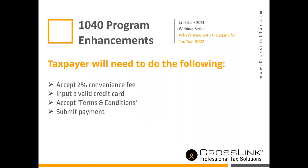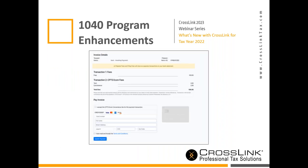Once you send that invoice, what does your taxpayer need to do? There is a 2% convenience fee for paying via credit card or debit card. They'll input and validate their credit card information, accept the terms and conditions, and once they click submit, that will reflect within the tax software showing you've collected their payment. On their end, they'll see the charges in the email, select pay invoice, enter their information, and click submit payment.